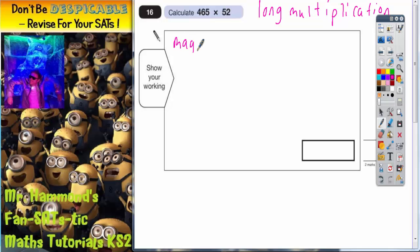First of all I'm going to do the magic zero method. Now then, magic zero method you need to set it out properly first. So we've got 465 multiplied by 52 and you need 3 lines in which to do your working out. Okay, so here we go.